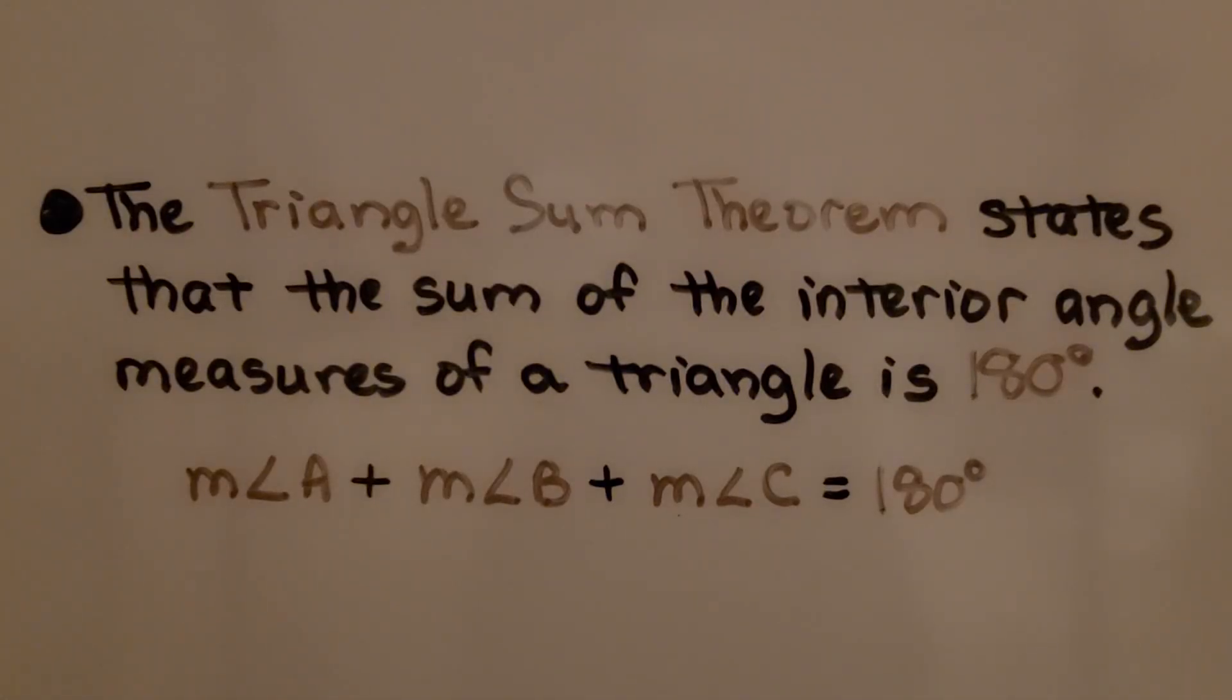Remember from the previous video, the triangle sum theorem states that the sum of the interior angle measures of a triangle is 180 degrees. The measure of angle A plus the measure of angle B plus the measure of angle C is equal to 180 degrees.